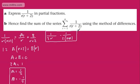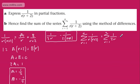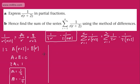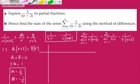Hence find the sum of the series from r equals 1 to n of 1 over r(r+2) using the method of differences. We can say the sum from r equals 1 to n of 1 over r(r+2) equals the sum from r equals 1 to n of 1 over 2r minus 1 over 2(r+2), which we've just found using partial fractions. Setting up a little table, we'll manually sum this from r equals 1 up towards n.